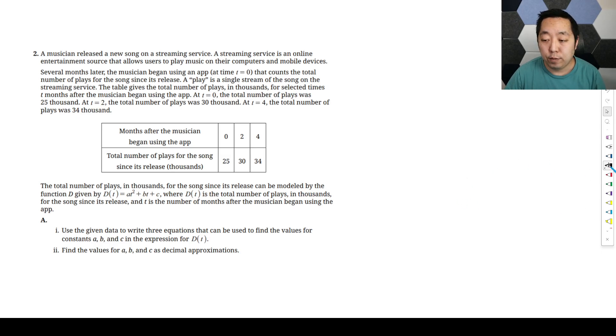Here we're looking at the second FRQ in the 2025 AP Pre-Calculus. A musician released a new song on a streaming service, an online entertainment source that allows users to play music on their computers and mobile devices. Great that they explained that to us.